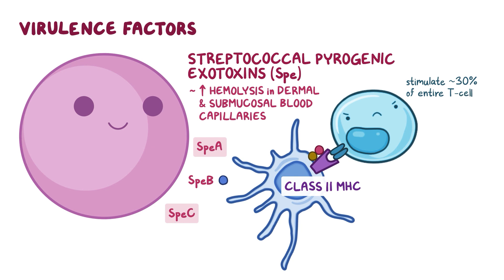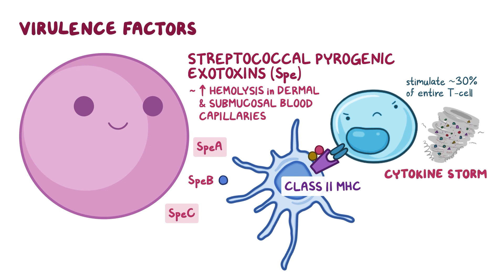This is 300 times more powerful than conventional antigens, and it stimulates the release of a whole bunch of inflammatory cytokines. Specifically, this is called a cytokine storm, and it can result in toxic shock syndrome (TSS), which happens when a cytokine storm triggers widespread systemic vasodilation, making blood pressure drop, which leads to poor perfusion of vital organs.